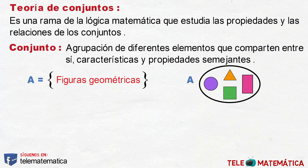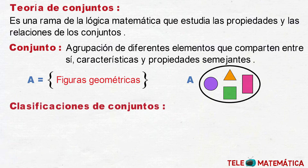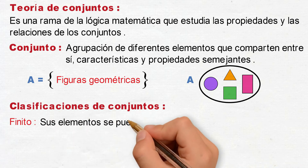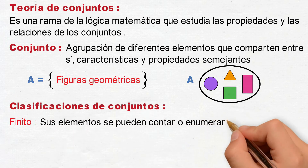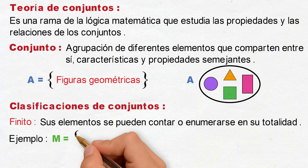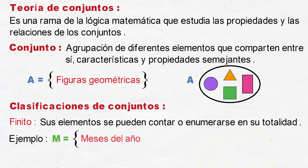Y en tercer lugar, introduciremos algunas de las clasificaciones de los conjuntos. Como primera clasificación, conjunto finito, que se define como: sus elementos se pueden contar o enumerarse en su totalidad. Por ejemplo, tenemos el conjunto M, definido por los elementos, los meses del año.